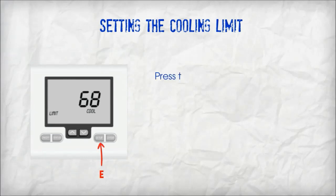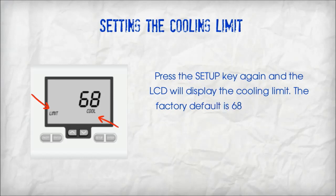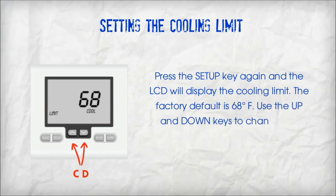Setting the cooling limit. Press the setup key again and the LCD will display the cooling limit. The factory default is 68 degrees Fahrenheit. Use the up and down keys to change the cooling limit setting. If using a zone panel, it is recommended not to go below factory default.